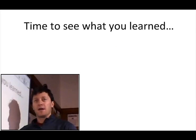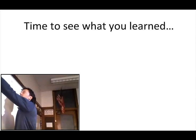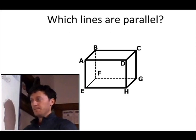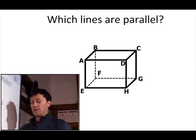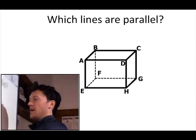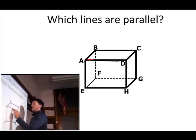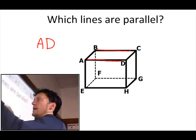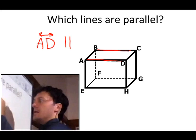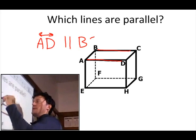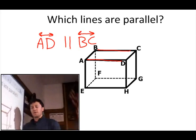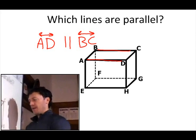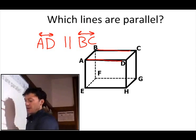Quick review — pause if you want an extra second. First question: which lines are parallel in this box diagram? Line AD is parallel to line BC. You might also have said AB and EF are parallel, or EH and FG are parallel. Those are all good examples.